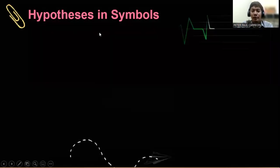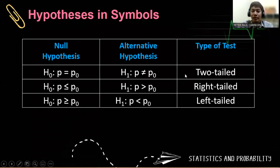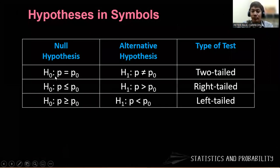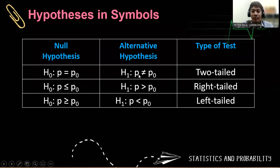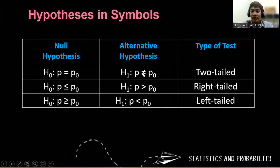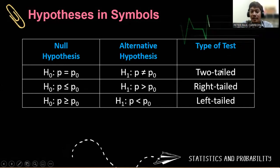So how do we use hypothesis in symbols? Observe the given table. Our H sub 0 is when P is equal to the hypothesized value P sub 0. For the alternative hypothesis, that is P is not equal to P sub 0, and that gives us a two-tailed test.